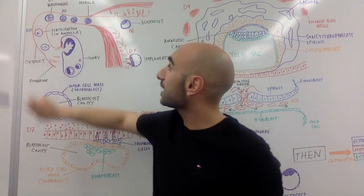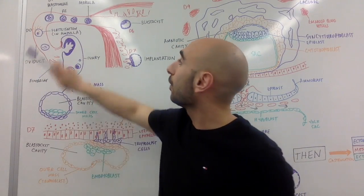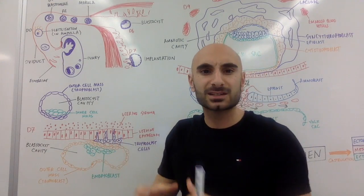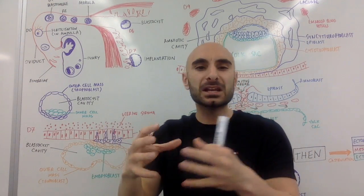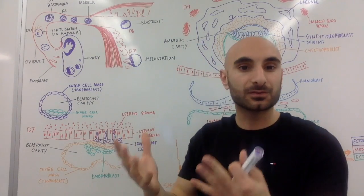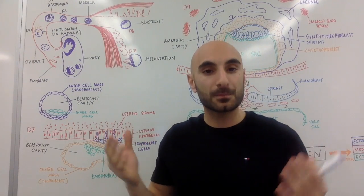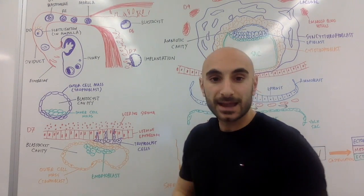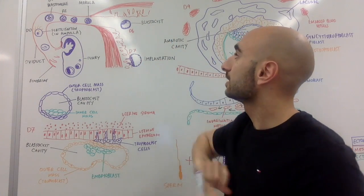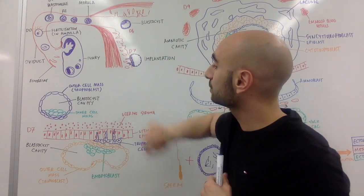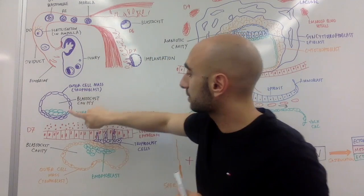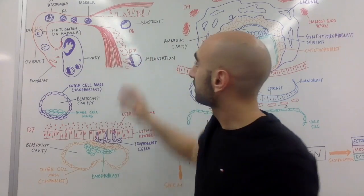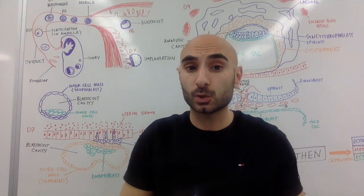Day zero: fertilization. Day one: blastomere. Day four: four cells. Day three: it's called a morula — it's like a solid sphere of cells, just the division that occurs from the male and female gametes binding and fusing. On day six, we have something called the blastocyst. This is essentially this structure here. The cells are starting to differentiate a little bit.